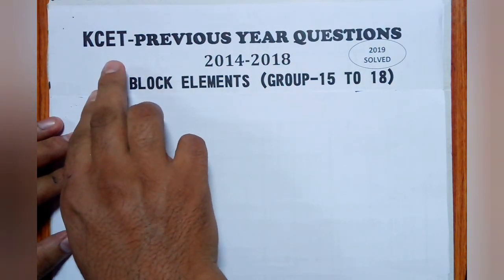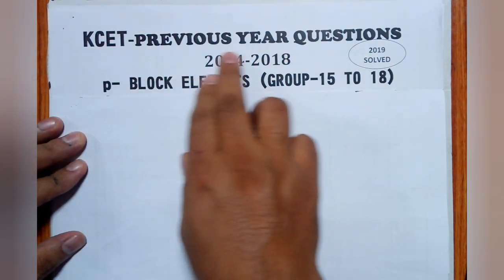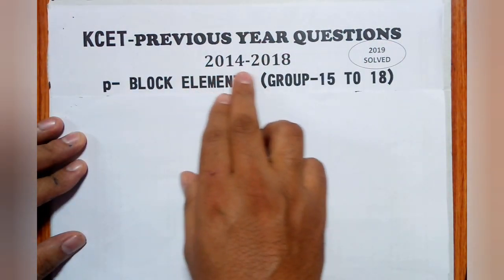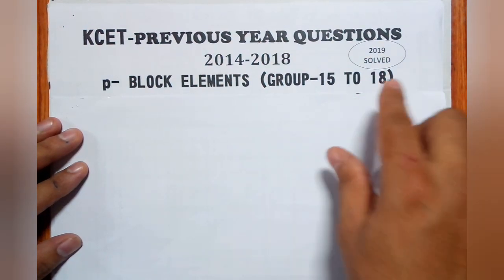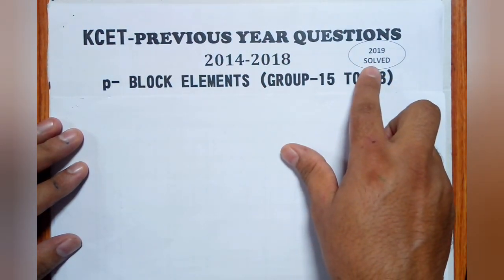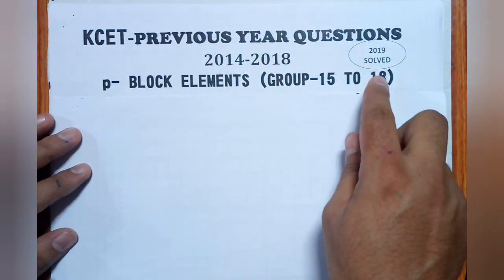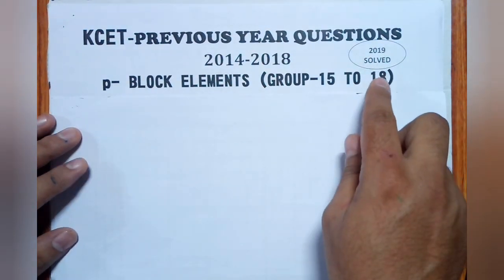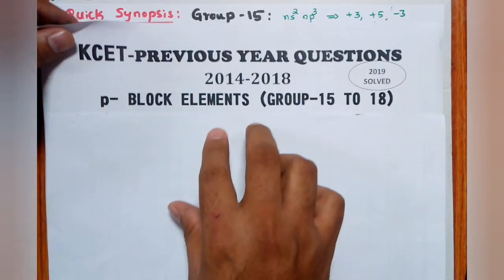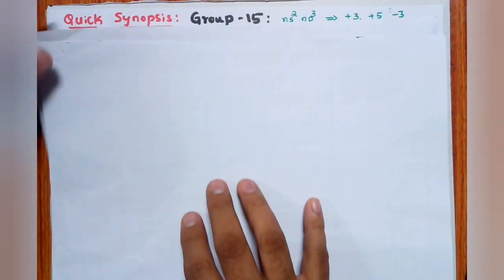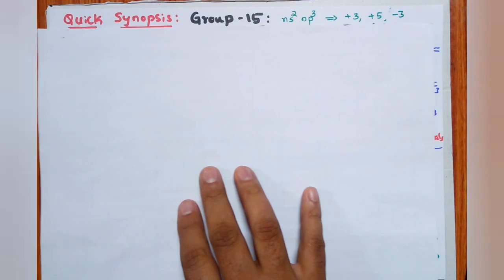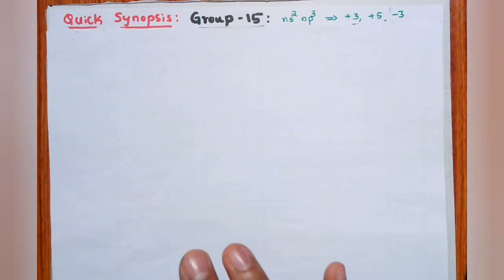Hello students, welcome to RH Chemistry. Today I am going to discuss the final punch KCET previous year questions from 2014 to 2018 on P-block elements, Group 15 to Group 18. The 2019 paper has already been solved and the link is given in the description box. So before starting with P-block elements, let us first discuss the synopsis part.